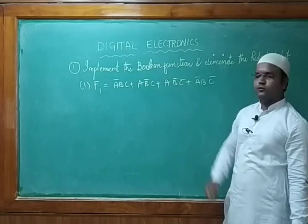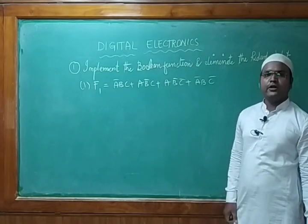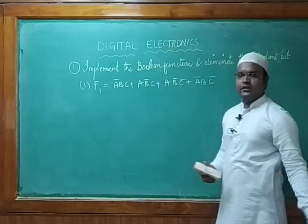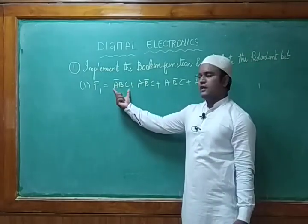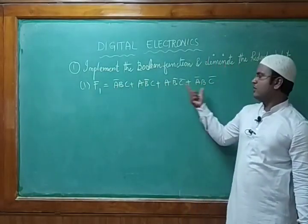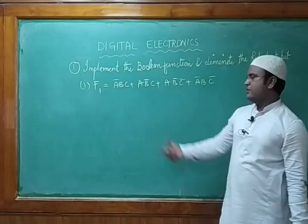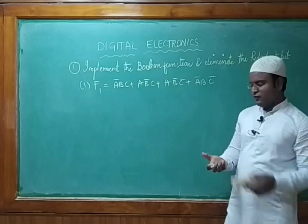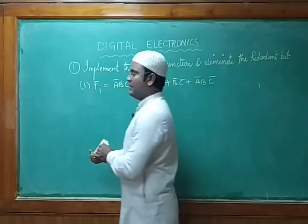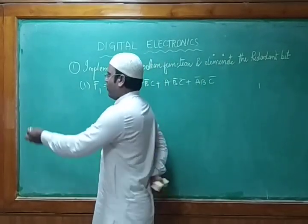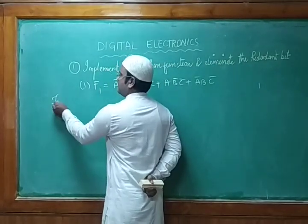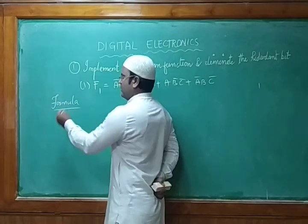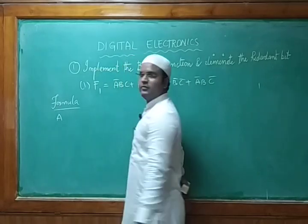So for doing this, we take the function f1. In f1, how many terms do we have? We have 1, 2, 3, and 4 terms. For handling these four terms, we should keep in mind the relevant formulas. We need to remember the formulas of De Morgan's law and Boolean theorems.